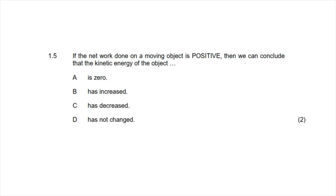Question 1.5: If the net work done on a moving object is positive, we can conclude about its kinetic energy using the work-energy theorem, which states that net work equals the change in kinetic energy. If net work is positive, kinetic energy has increased. A net force causes acceleration by Newton's second law, increasing velocity and therefore kinetic energy. The correct answer is option B: the kinetic energy of the object has increased.